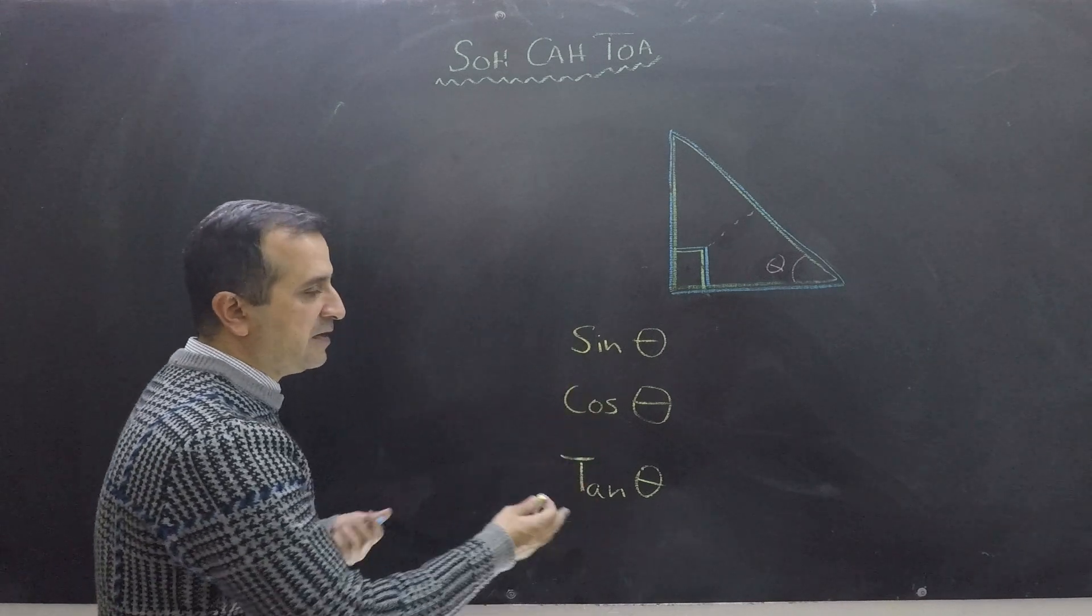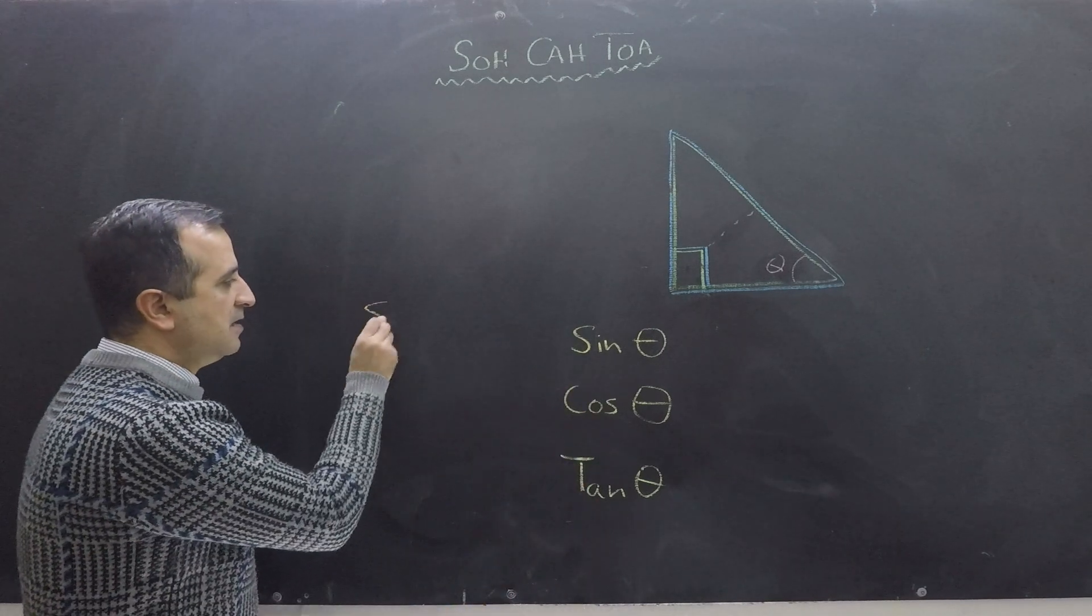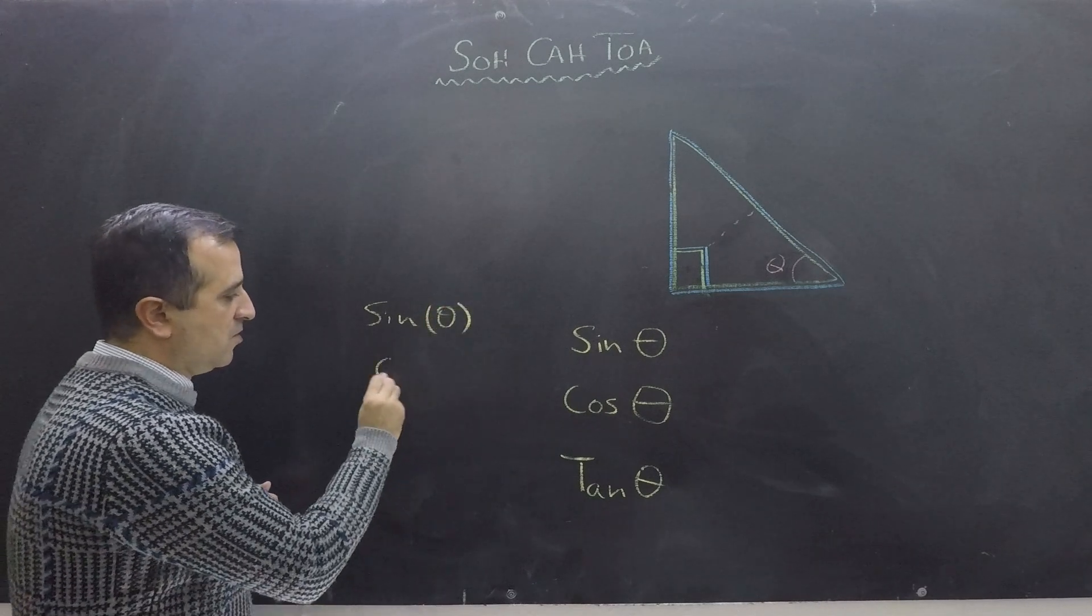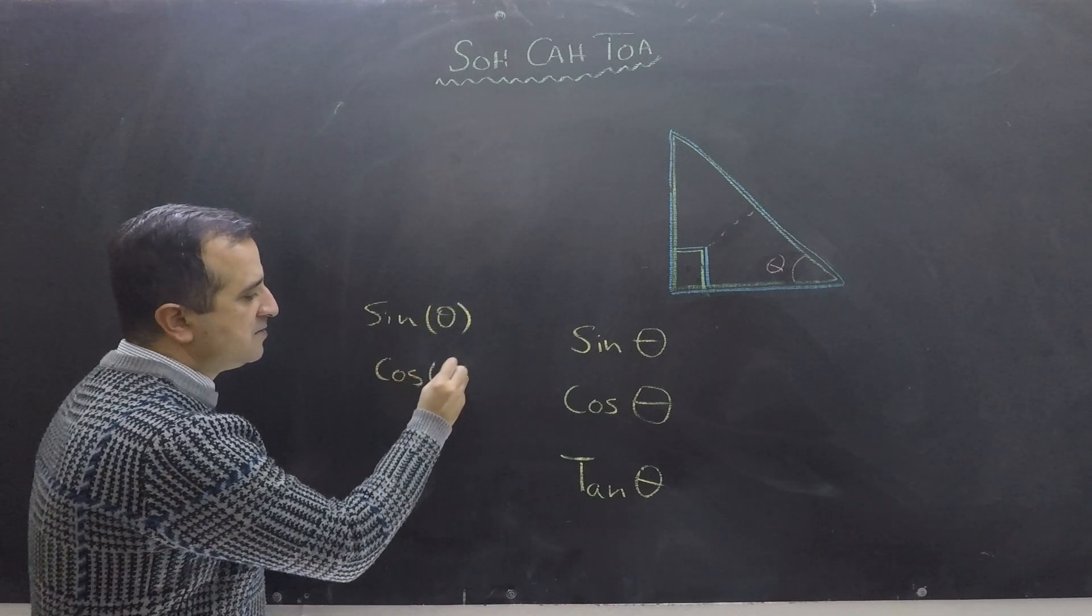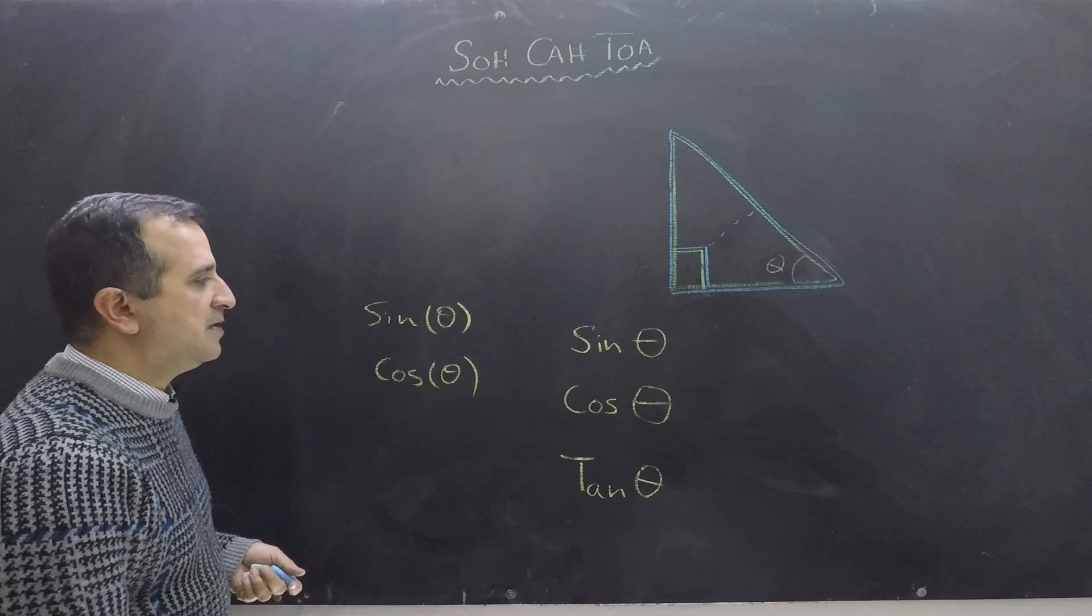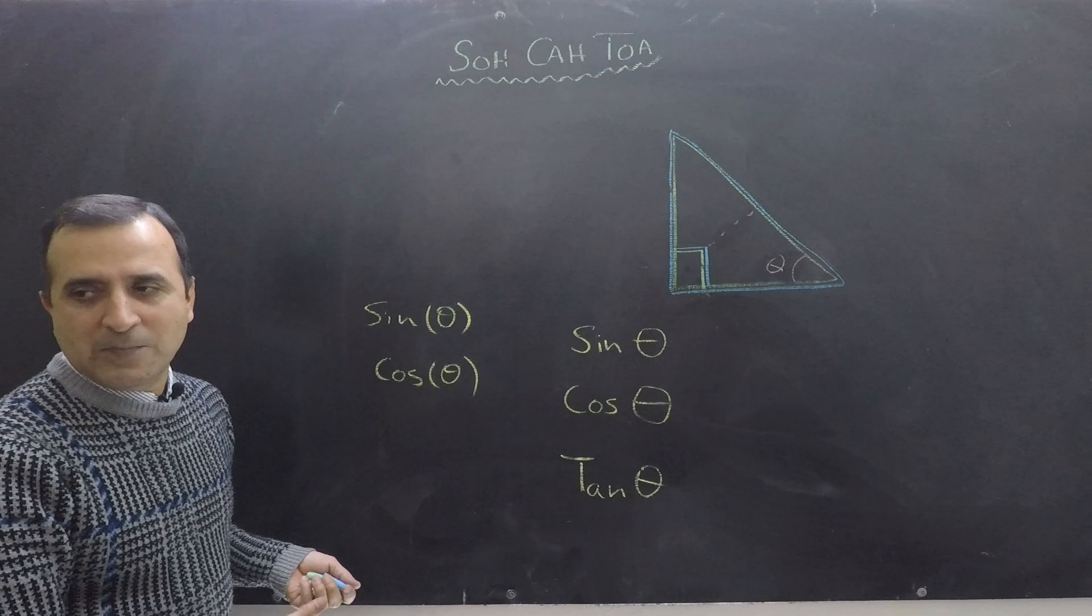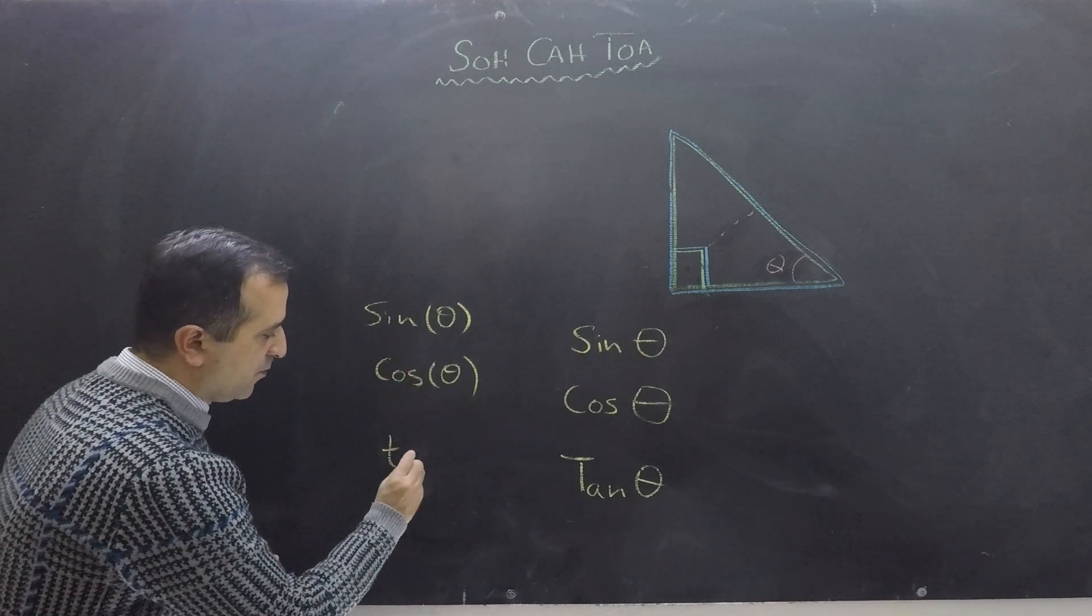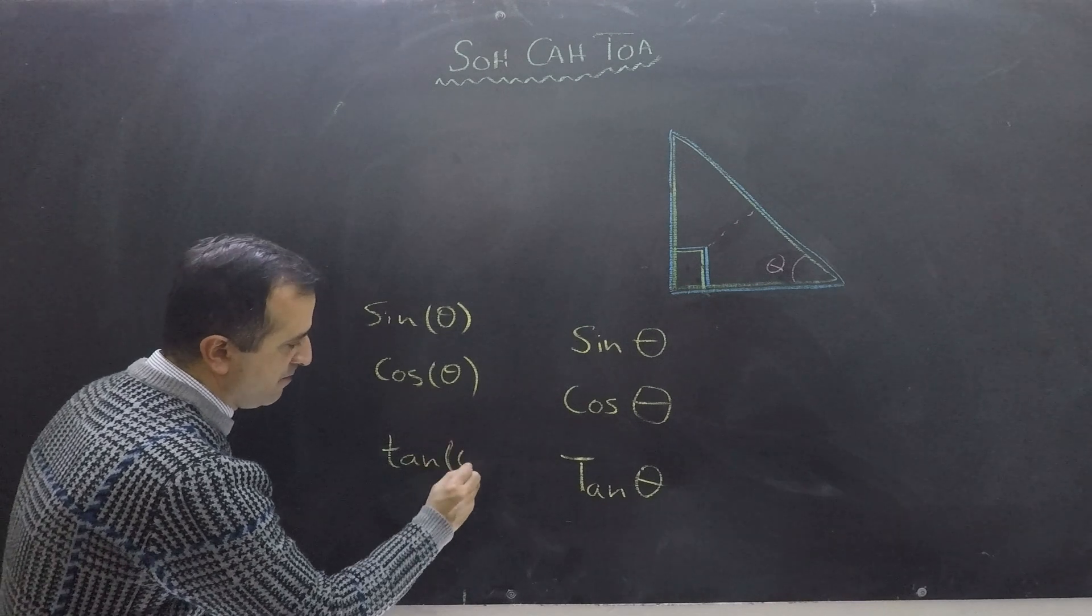Some people also write these in a function notation like this: sine of theta and cos of theta. This notation is more like a function notation, but with the passage of time people write more and more in this form than in that form. So both are same, both have same meaning.